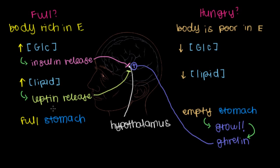These three hormones, insulin, leptin, and ghrelin, are the main players that determine whether we're hungry.